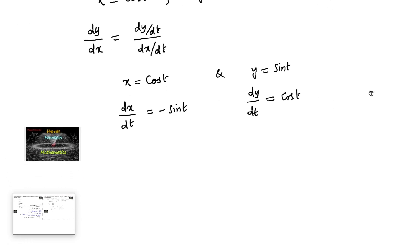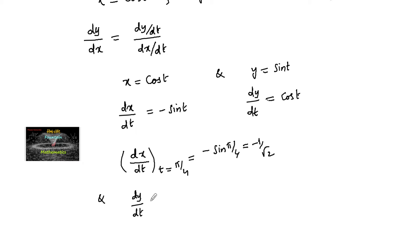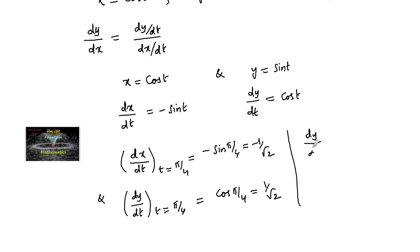Let's find the slope of tangent at the point t is equal to pi by 4. dx by dt at t equal to pi by 4 is equal to minus sin(pi/4), that is minus 1 by root 2. And dy by dt at t equal to pi by 4 is equal to cos(pi/4), that is 1 by root 2. Hence dy by dx at t equal to pi by 4 is 1 by root 2 divided by minus 1 by root 2, which gives negative 1.